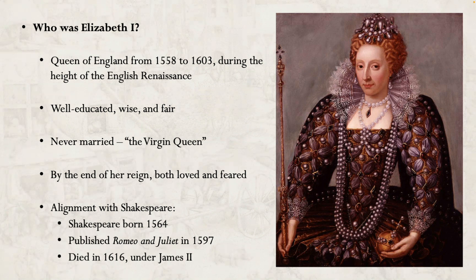Who was Elizabeth I? She was Queen of England from 1558 to 1603 — the height of the English Renaissance. She was on the throne for 45 years, which was a very long time for a ruler during that period — you'll find out why later in this presentation. She was known as being particularly well-educated, especially for a woman of the era. She was very wise and was seen as fair.